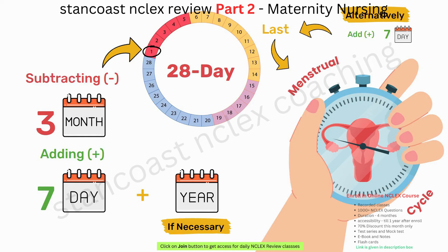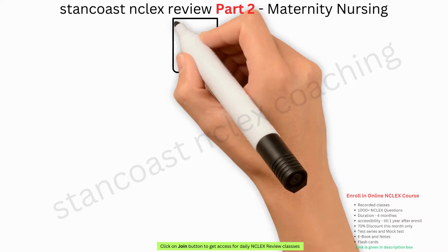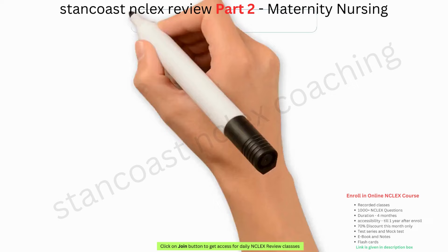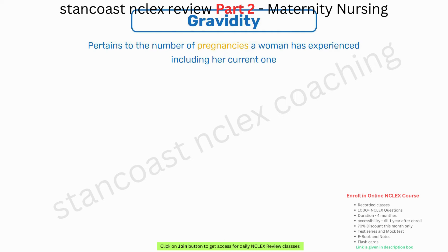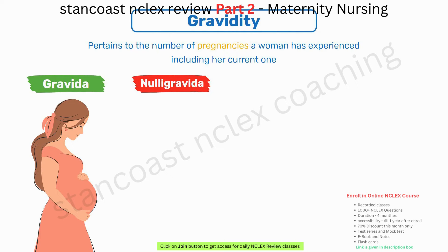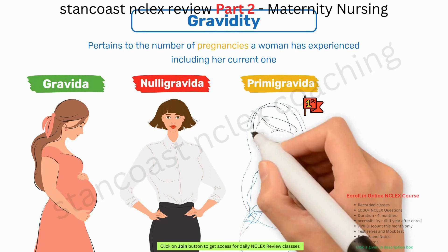Gravidity and Parity are terms that provide insight into a woman's reproductive history. Gravidity pertains to the number of pregnancies a woman has experienced, including her current one. A pregnant woman is referred to as a gravida. A nulligravida is a woman who has never been pregnant, while a primigravida is embarking on her first pregnancy journey, and a multigravida has been pregnant at least once before.